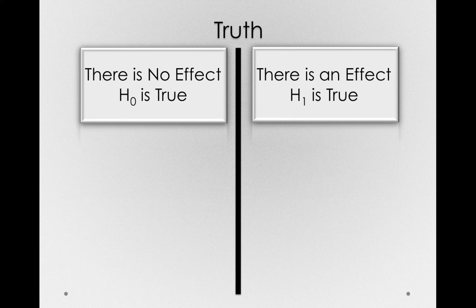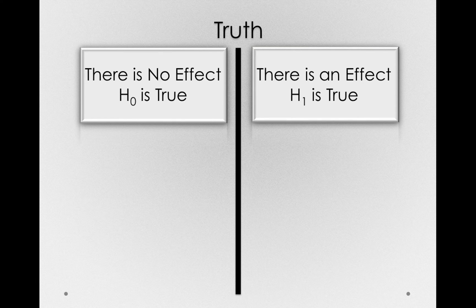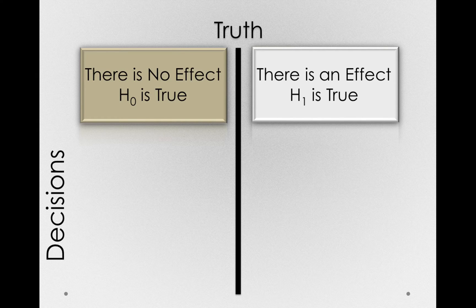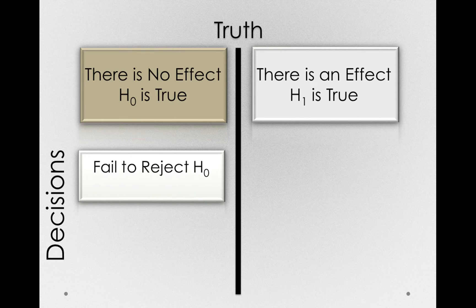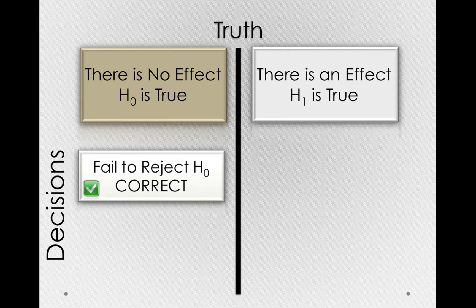On the basis of our sample, we'll make a decision about which truth we believe is actually true for the world, but we won't always be able to make the right decision. Sampling error is always acting, so occasionally we'll get samples that are different from whatever truth there is out there, and this will lead us to make a decision that's wrong. Let's start assuming that there is no effect in the world — that is, H0 is actually true. Our decision can be to fail to reject the null hypothesis, which will happen if we get a sample that lands us in the central region of the sampling distribution, and in that case, this would be a correct decision.